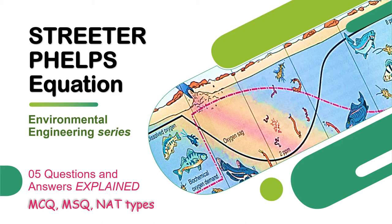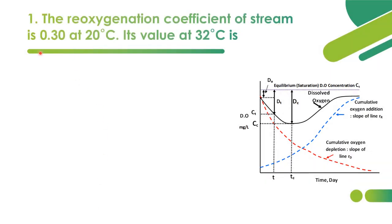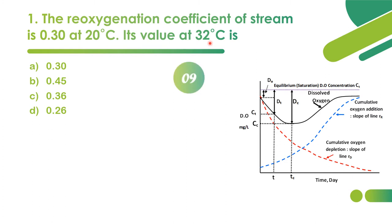The first question: the reoxygenation coefficient of a stream, kr, is 0.3 at 20°C. We have to find the kr value at 32°C. This is based on the reoxygenation and deoxygenation concept. The answer is option C: kr = 0.36 at 32°C.